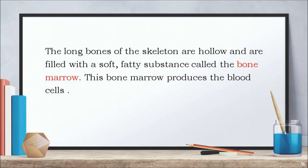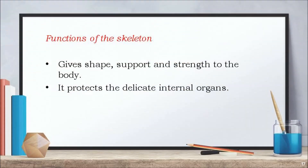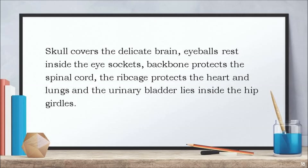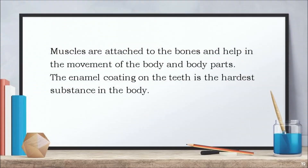This bone marrow produces the blood cells. Functions of the skeleton: The skeleton gives shape, support and strength to the body. It protects the delicate internal organs. The skull covers the delicate brain. Eyeballs rest inside the eye sockets. The backbone protects the spinal cord. The ribcage protects the heart and lungs. The bones and the urinary bladder lie inside the hip girdles. Muscles are attached to the bones and help in the movement of the body and body parts. The enamel coating on the teeth is the hardest substance in the body.